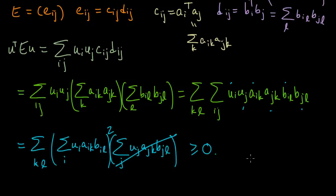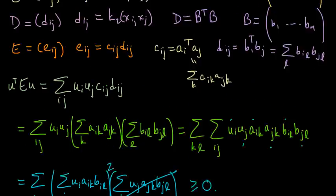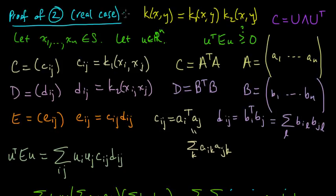So that's good. So that shows that this u transpose E u is non-negative. And we know that E was already symmetric. So E is a symmetric positive semi-definite matrix. And therefore this kernel k, which was the product of these guys, is a positive semi-definite kernel. Very nice.